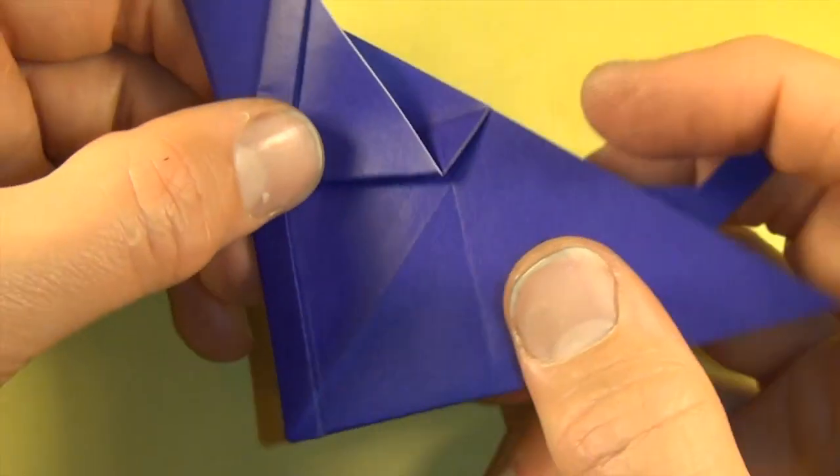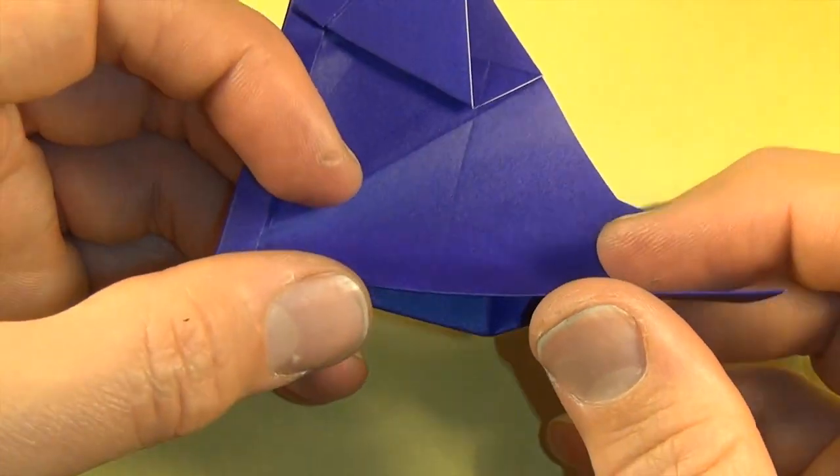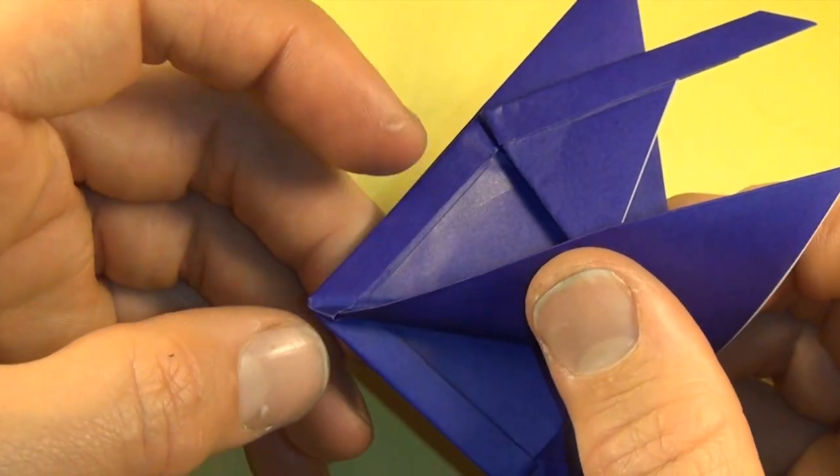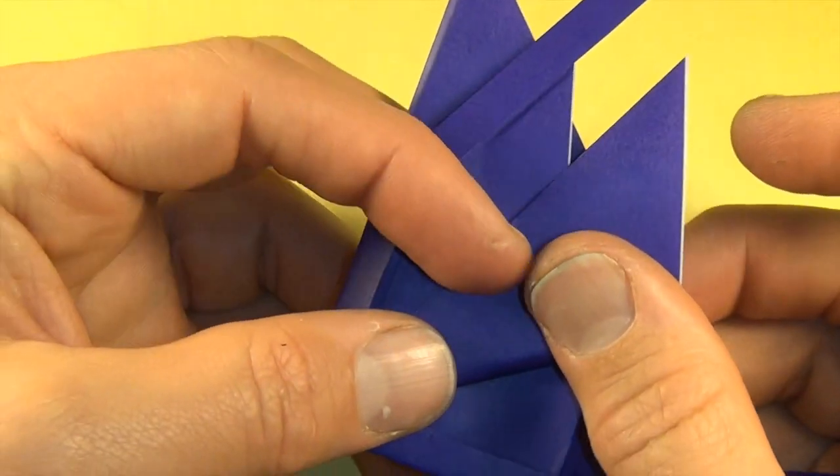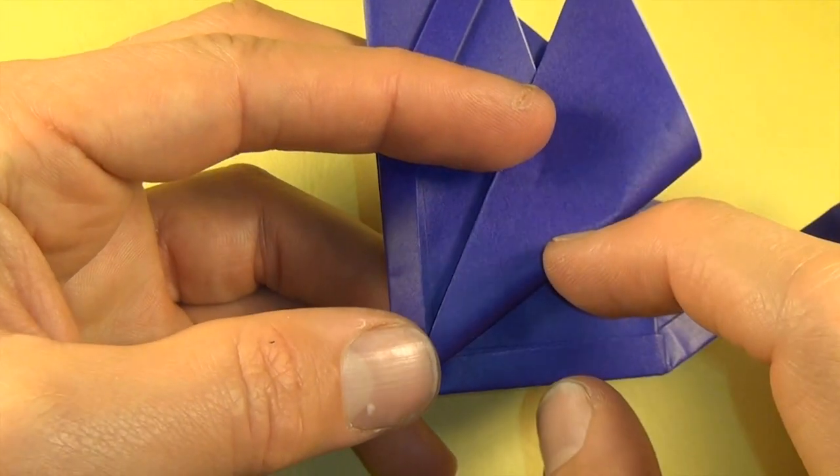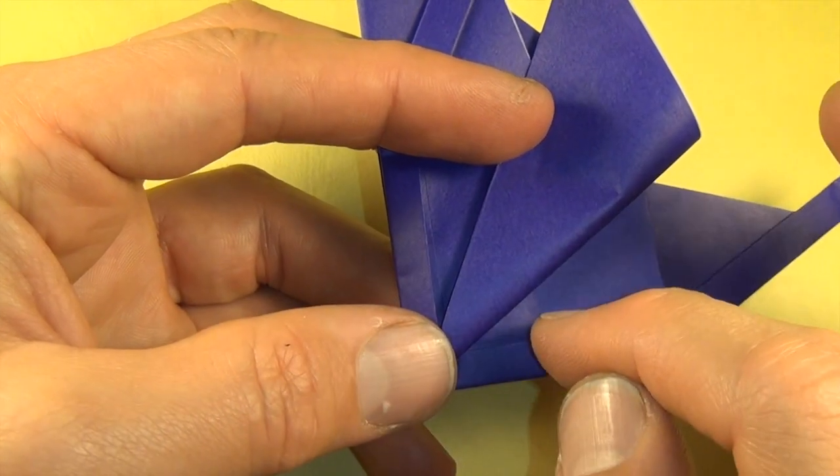And now we're going to fold this edge one-third of the way. Actually fold it underneath this flap here. So all these three angles should be equal.